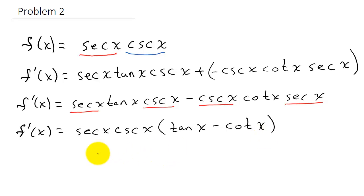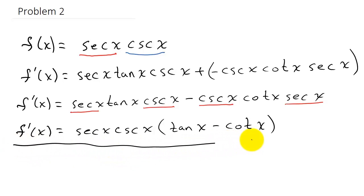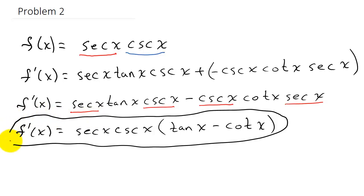We can leave the answer like this. If you wanted to, you could change everything to sine and cosine — writing tangent as sine over cosine and cotangent as cosine over sine — and combine those to simplify further. But I think this form is fine.